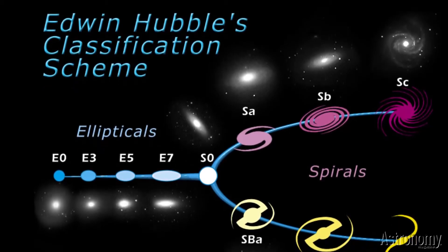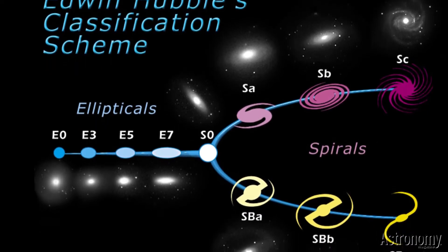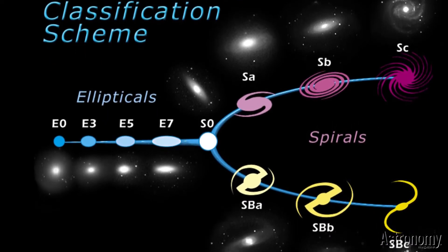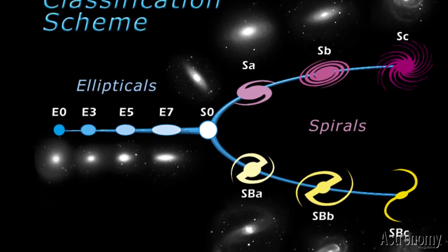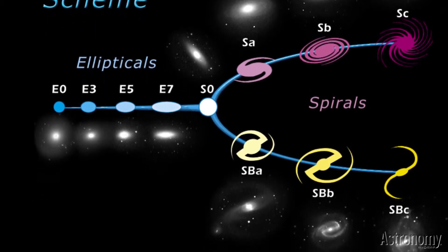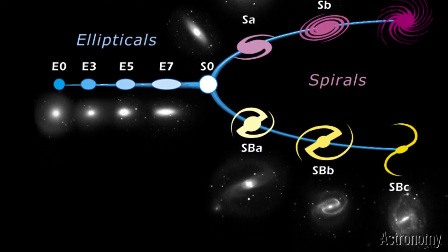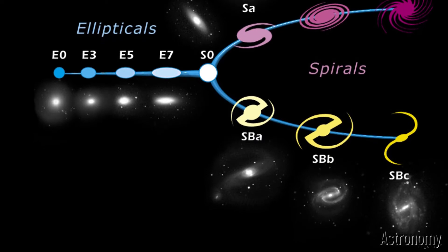Edwin Hubble famously developed a tuning fork diagram for sorting galaxies. Unfortunately, he called the large ellipticals early and the spirals late-type galaxies. Now, Hubble himself warned that he had no idea of how galaxies evolved, and it was simply a naming convention with no intended meaning. But since we're now pretty sure that late-type spirals merge to produce early-type ellipticals, the backwards names kind of suck.